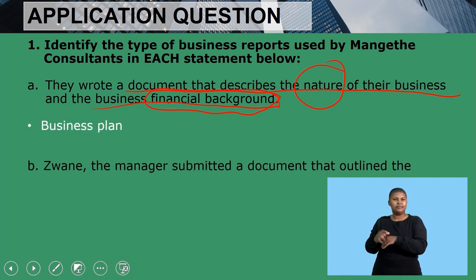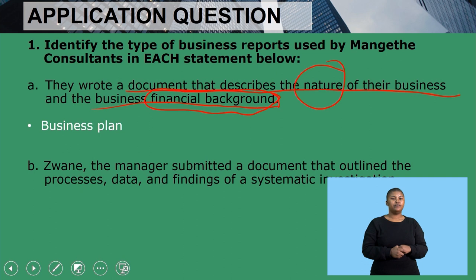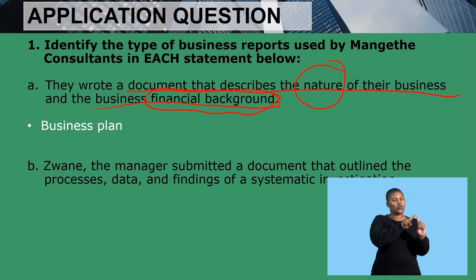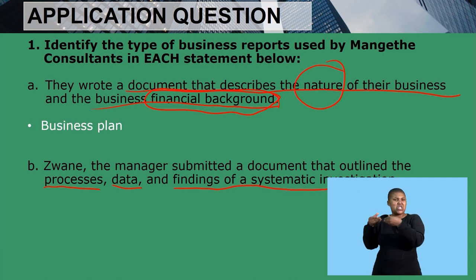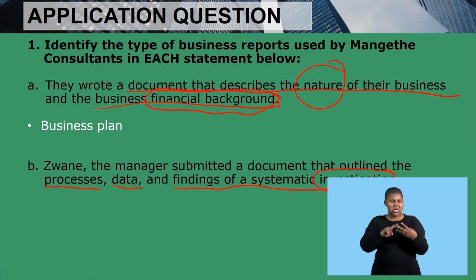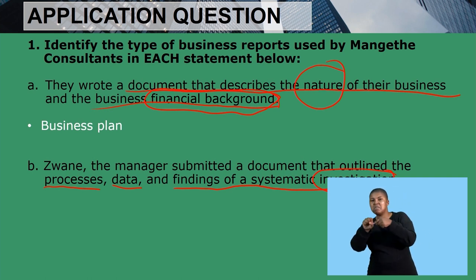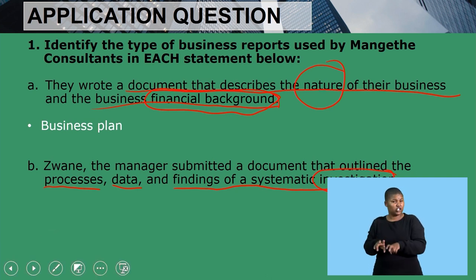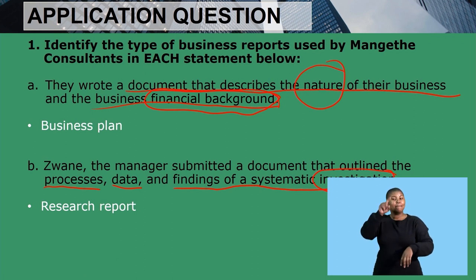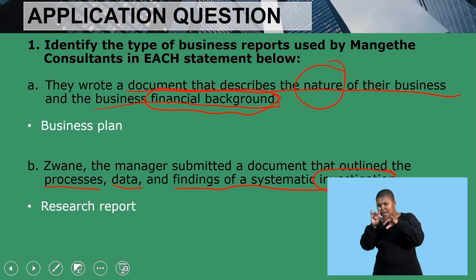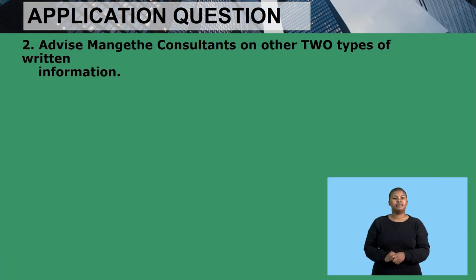The next question says Zwane the manager submitted a document that outlined the processes, data, and findings of a systematic investigation. Our keyword here is 'investigation.' The report that has to do with investigation is the research report, because you have to investigate in order to get the findings as well as the data.